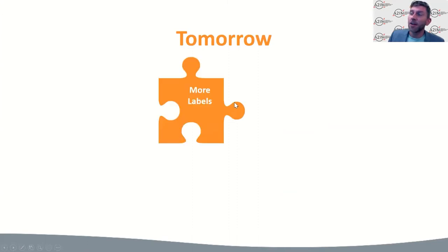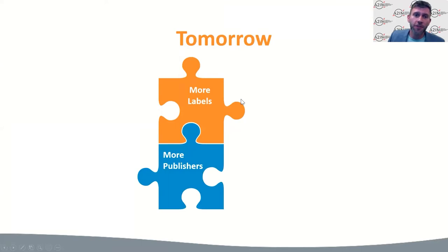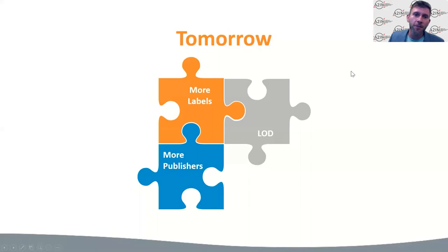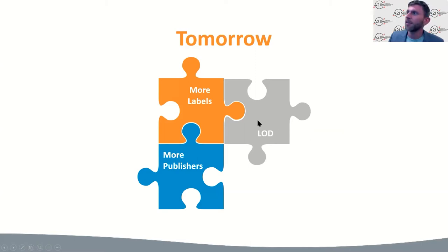Looking at what's coming down the road: the goal is to get more labels and publishers active and registered in MDX. The next major release is the ability to process LODs (Letters of Direction) in MDX — extremely important for keeping information accurate. When a publisher acquires a new catalog, they can update all shares in MDX, which immediately notifies all labels with a stake in that acquisition about the new publisher to pay and license from.